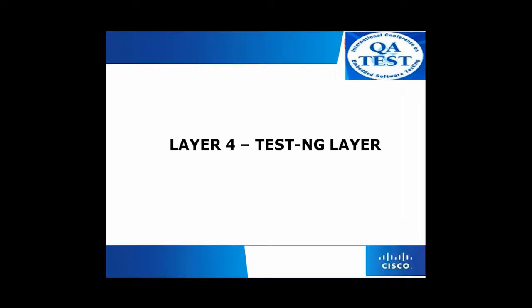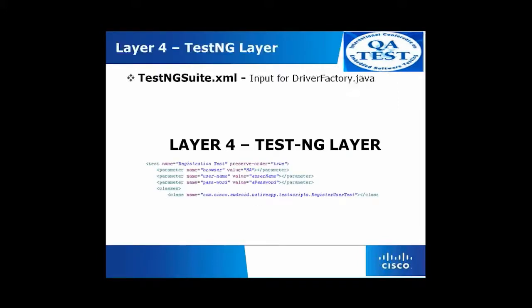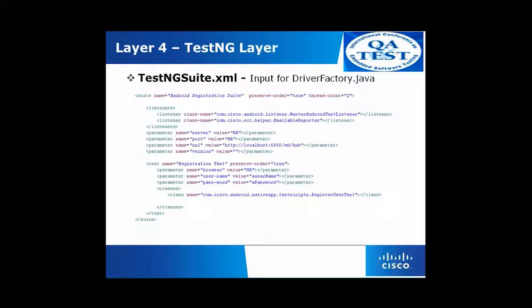Layer 4 is the TestNG layer. In the TestNG layer, we have the testng-suite.xml which is an input for DriverFactory.java. We use different listeners and pass parameters from here — the user details and login details are passed here along with the particular class to be tested. Control starts from here, taking corresponding details and passing control to the respective class specified. Once control is passed to the respective test layer, the tests are executed. Then control returns to the TestNG layer, where a corresponding report is generated and email is sent to respective owners.